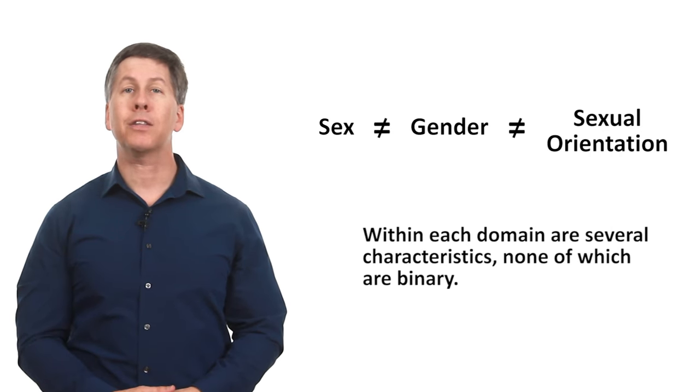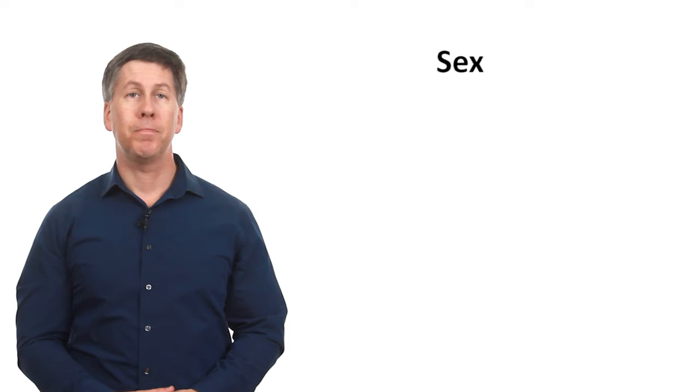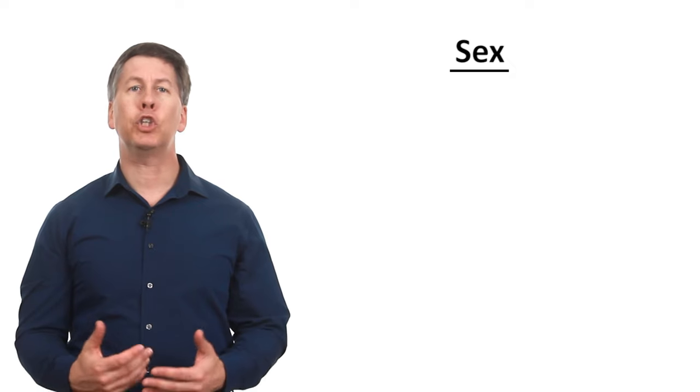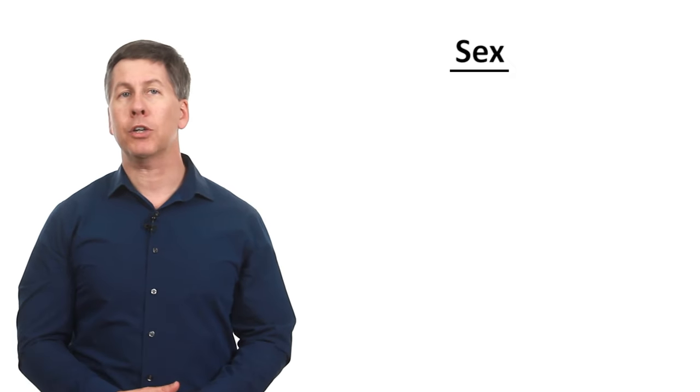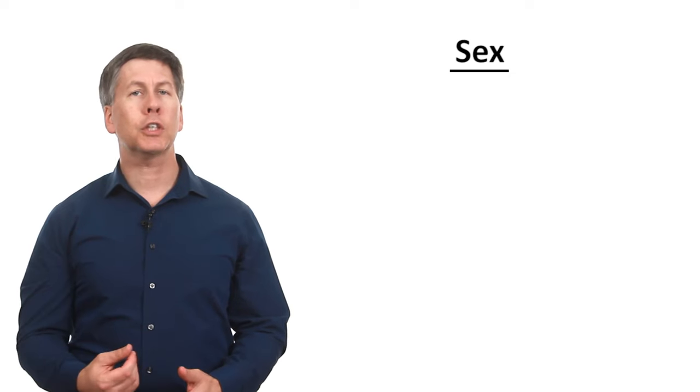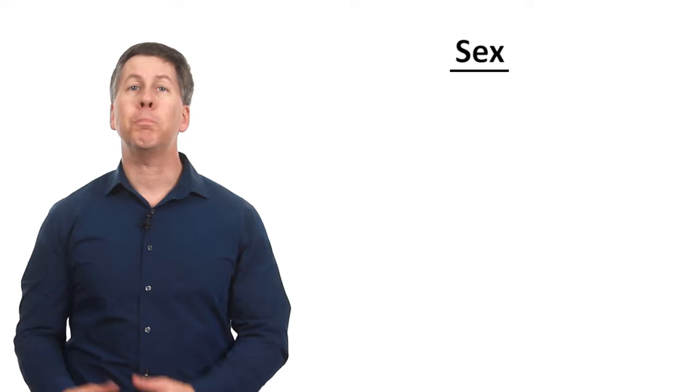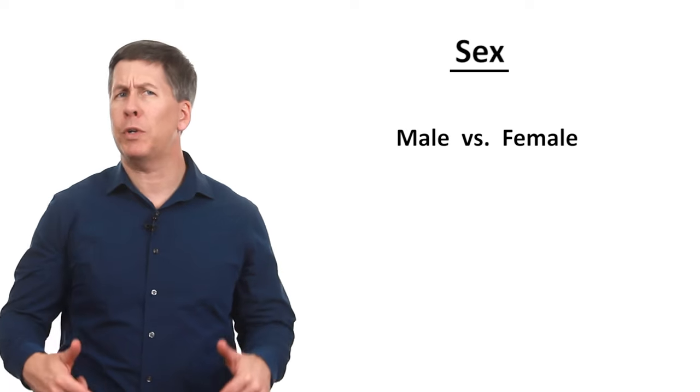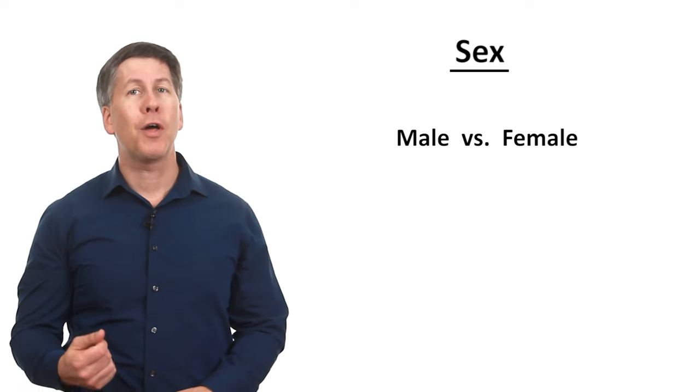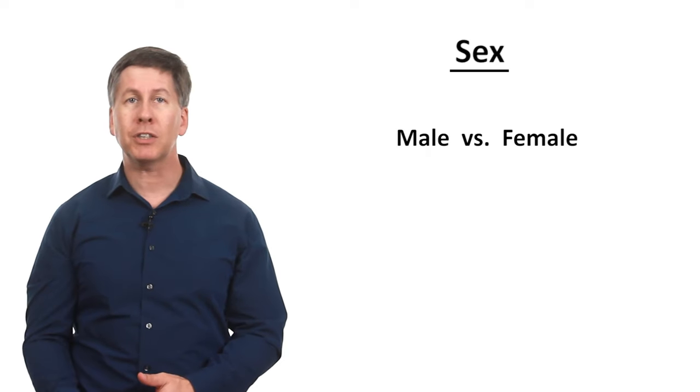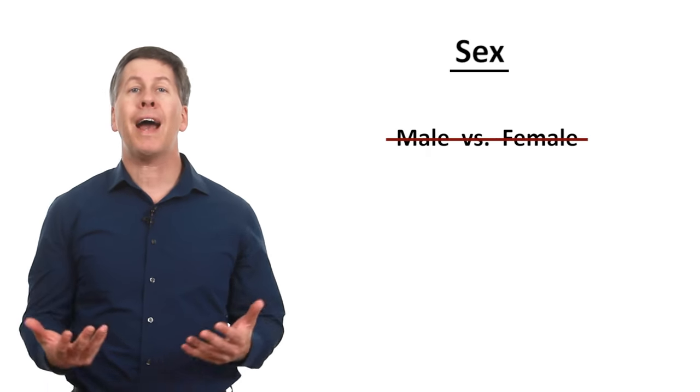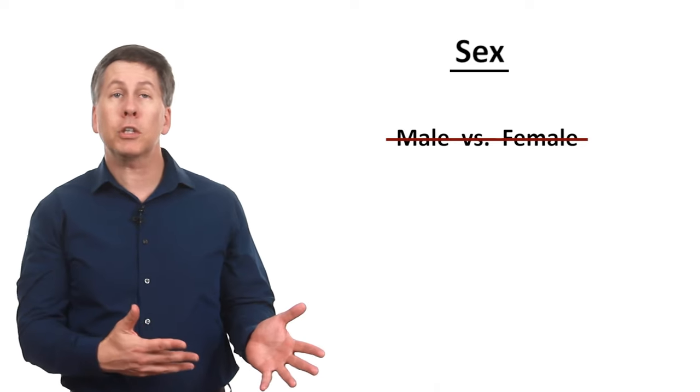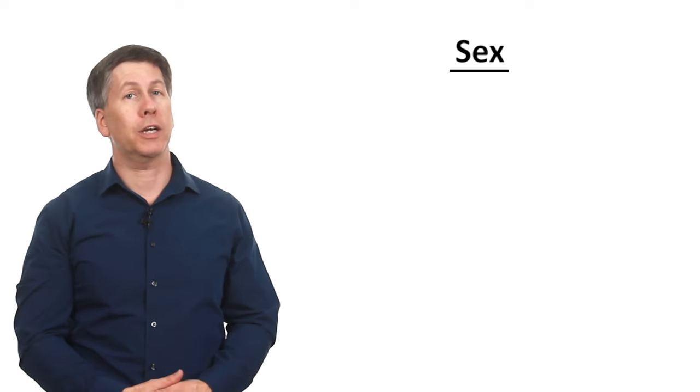Let's tackle each domain one at a time. First up, sex. This is sometimes labeled biological sex, but I think that's misleading since it implies that gender and orientation are somehow less biological. Sex describes one's physical self at birth. To many people, it refers to whether a person is male or female. That might seem very elementary. After all, sex is simply determined by what's between your legs, right? But remember that as I said, each domain contains multiple, separate characteristics, and that none of them are binary. So how is that possible with sex?